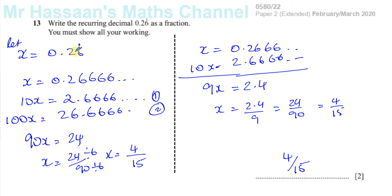So always make the pattern start after the decimal point and find two equations. Sometimes, if there is a number before the pattern starts, then you need to make two separate equations, one multiplying by 10, one multiplying by 100. It depends on the situation, on the question.